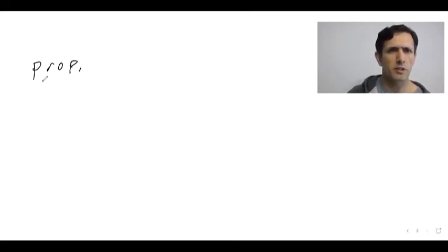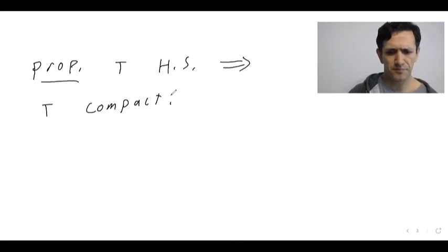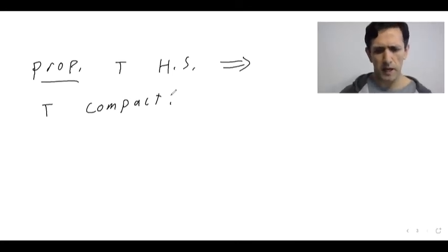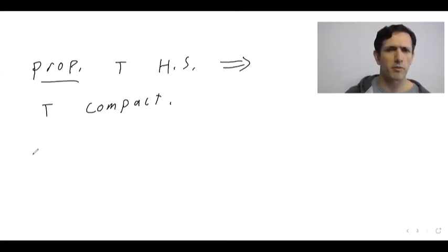So a little proposition: T Hilbert-Schmidt implies T is compact. There's not a whole lot to this; we just truncate, and here we're going to truncate in a slightly different way than before in terms of finite rank operators.